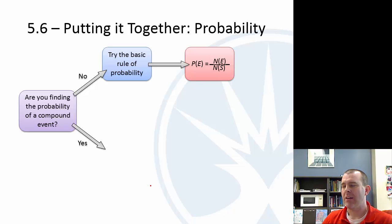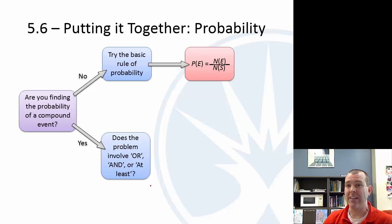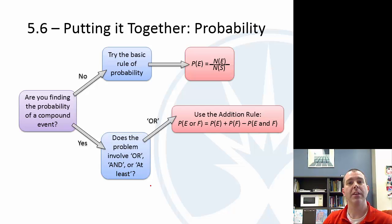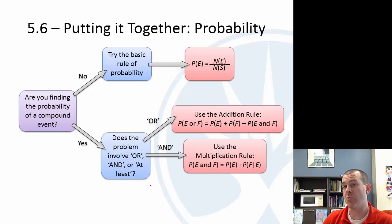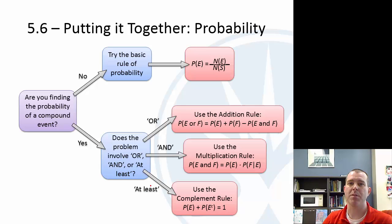If it is a compound, well, then there's a few different options. Is it an 'or', an 'and', or an 'at least'? If it's an 'or', then you have the addition rule. If it's an 'and', then you have the multiplication rule. If it's an 'at least', you can use the complement rule, where they add up to one.